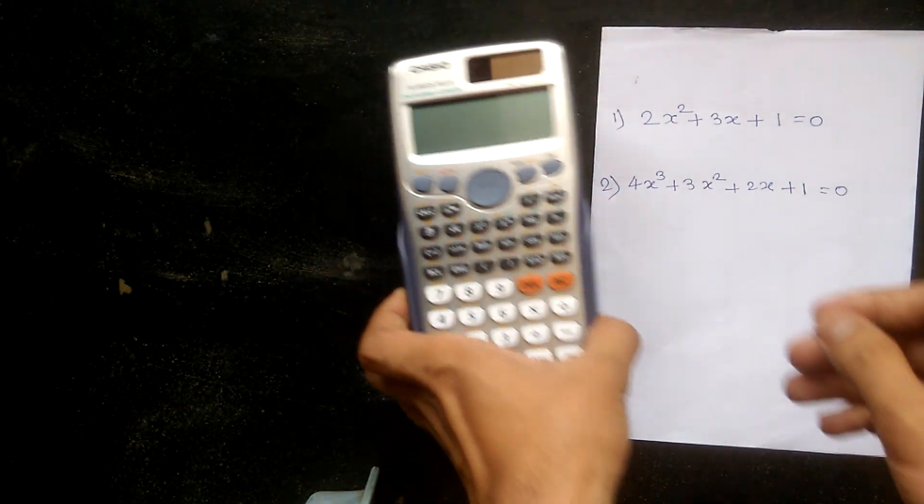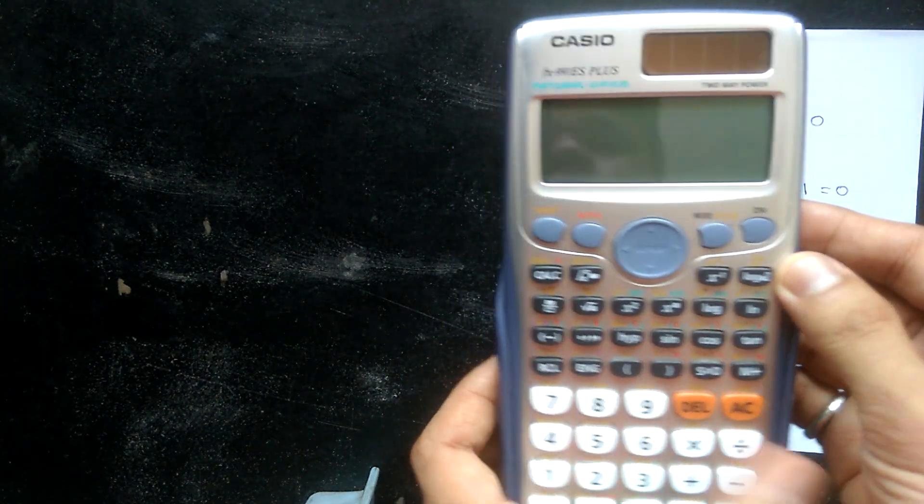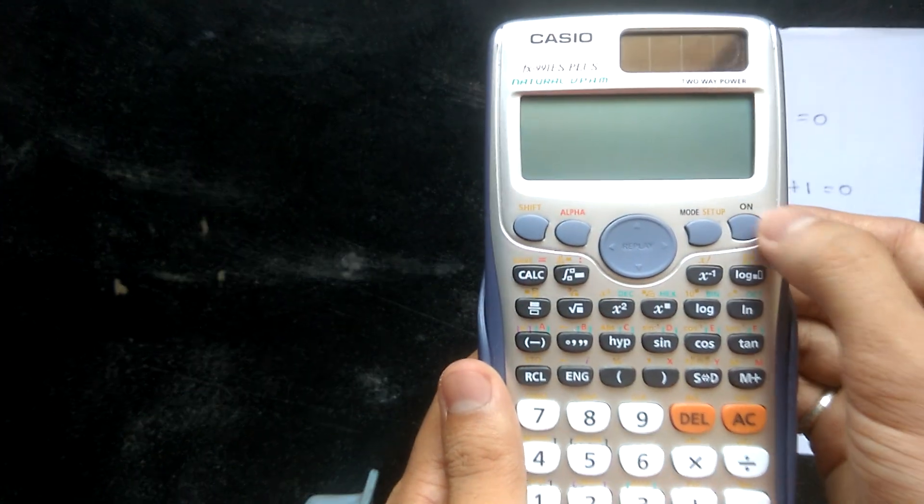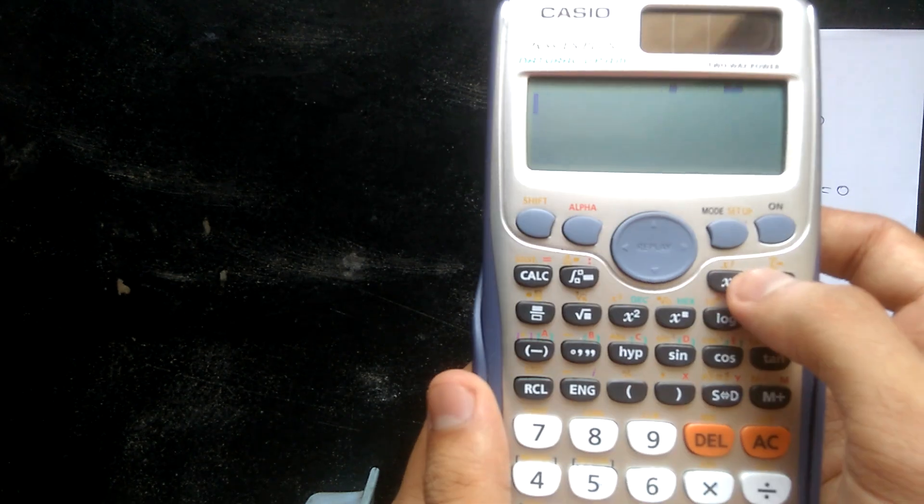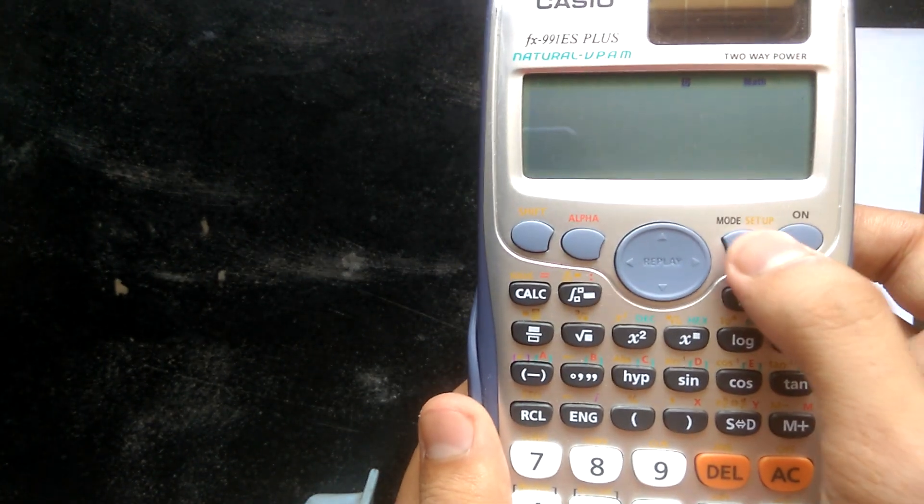We are using this calculator, the Casio fx991es plus. To do this operation, we have to turn it on by pressing the ON button, then we have to change the mode.